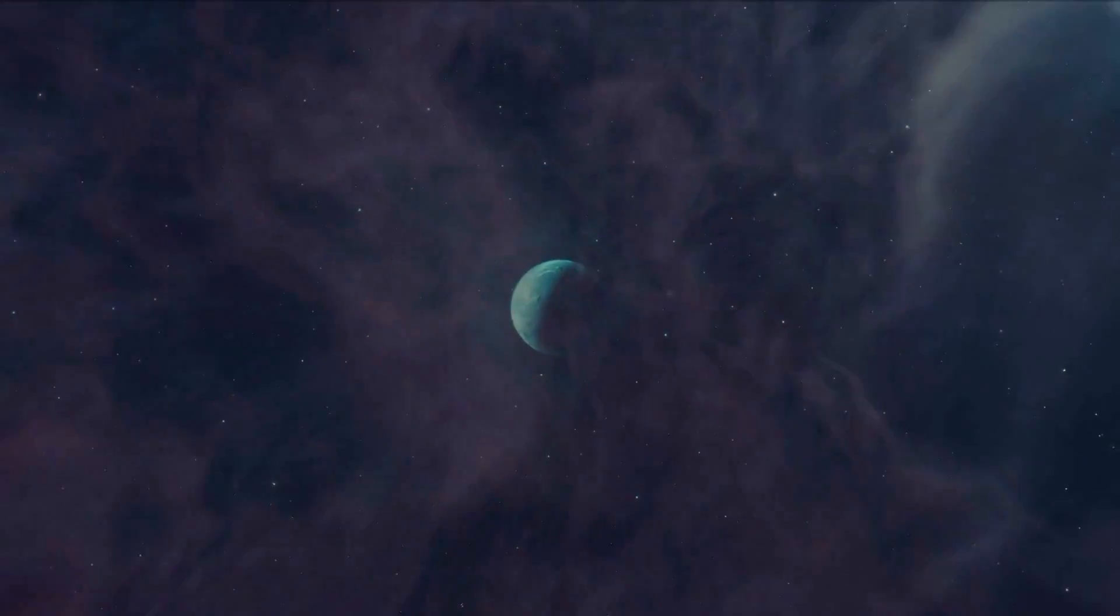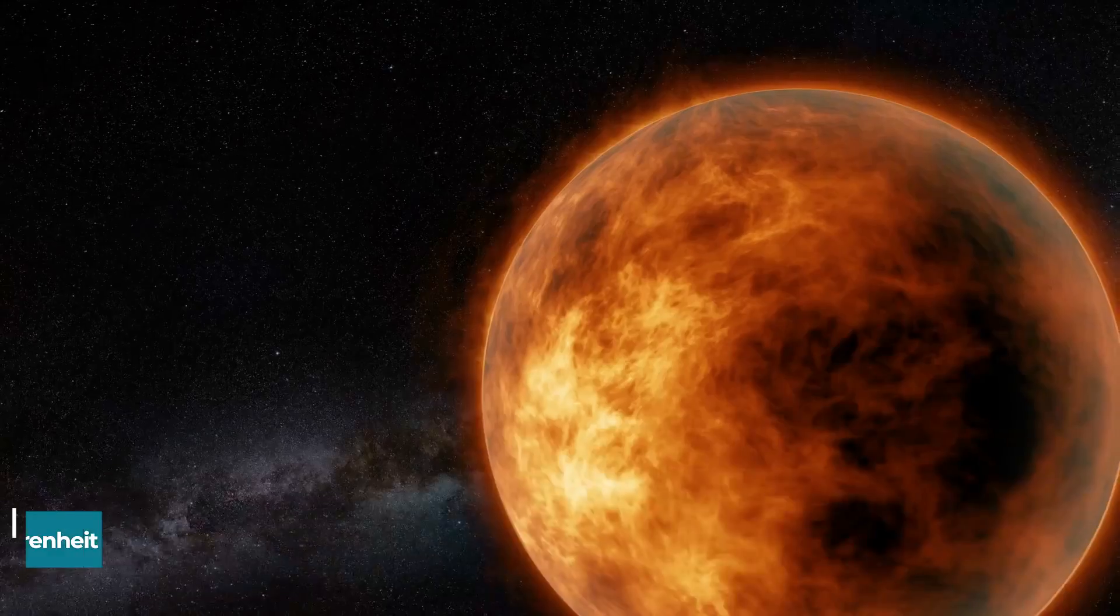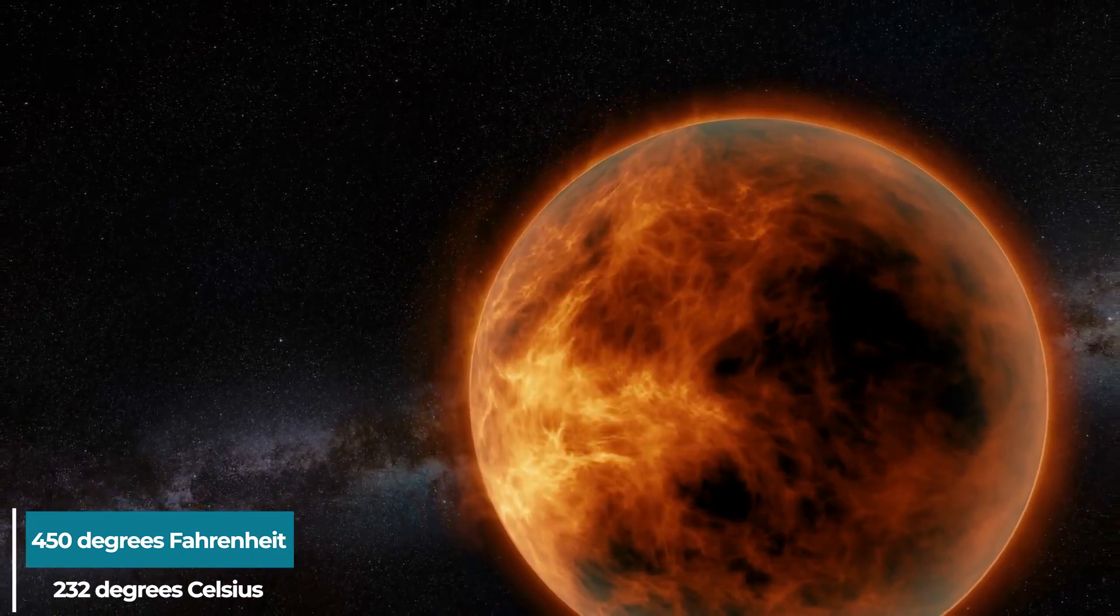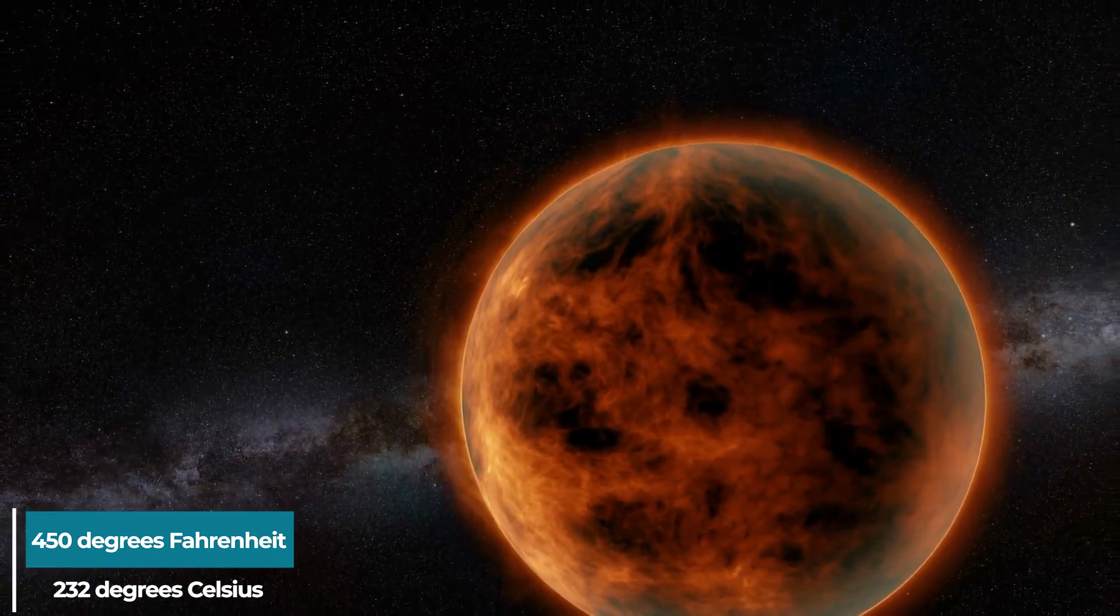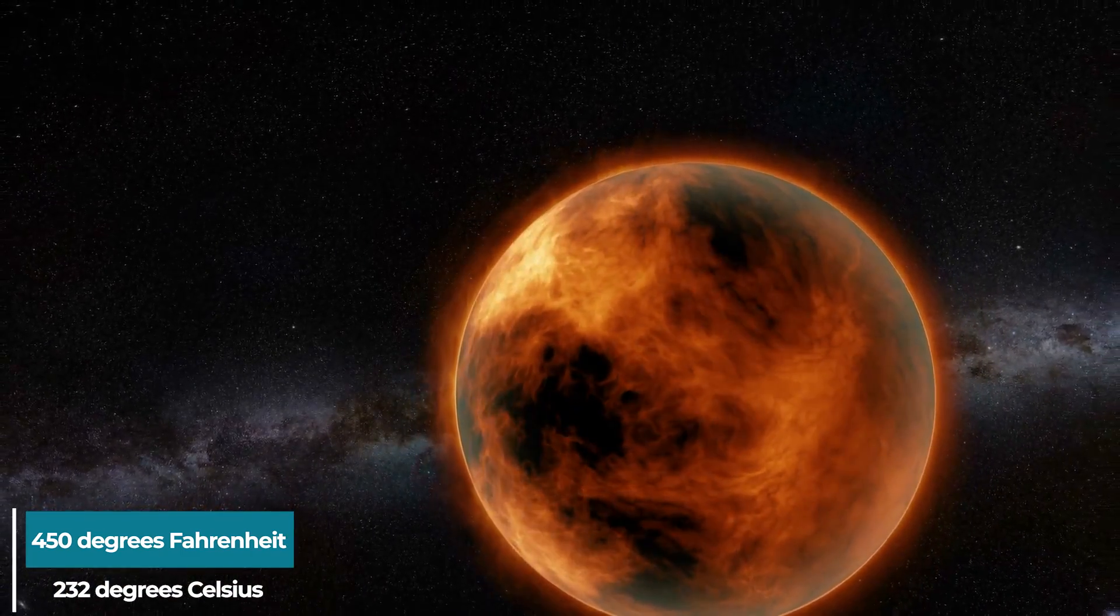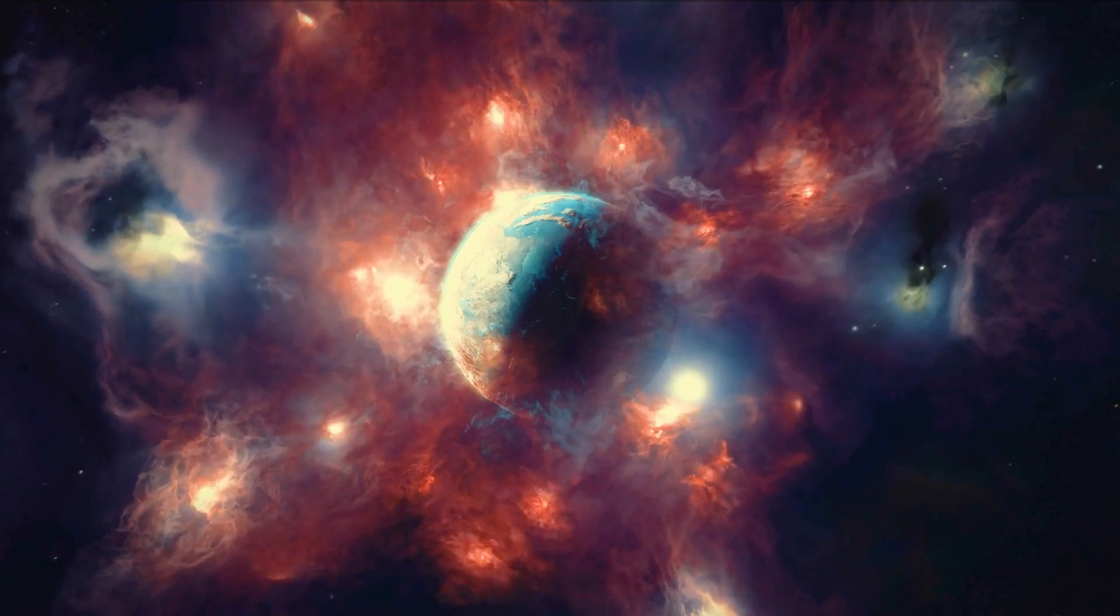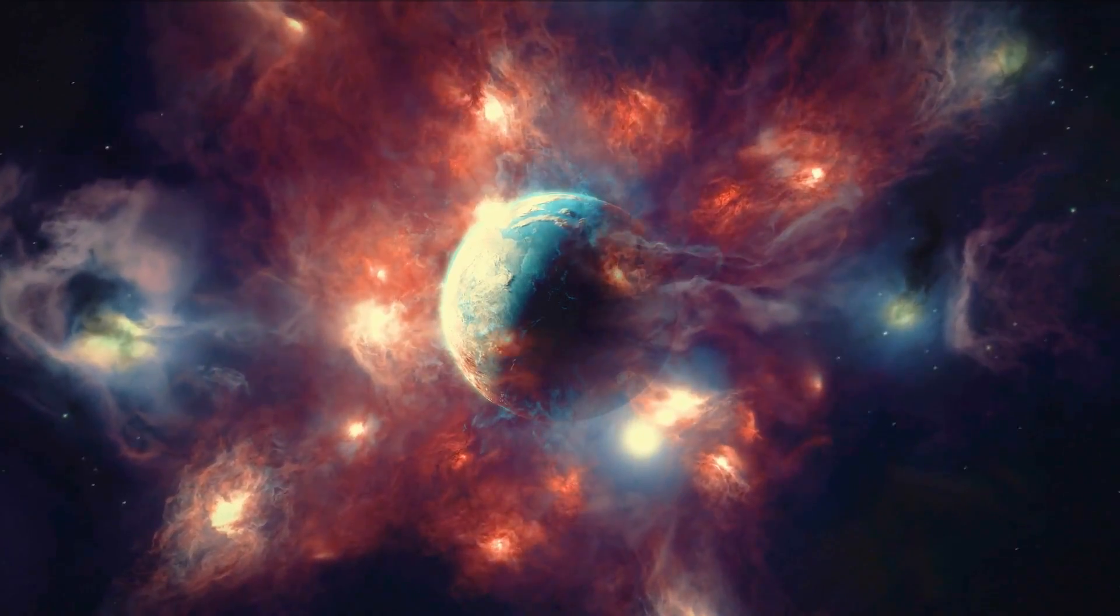They discovered that TRAPPIST-1b, the Earth-like planet, is most likely inhospitable due to its extreme heat, with a temperature of roughly 450 degrees Fahrenheit, 232 degrees Celsius, similar to that of an oven, and that it most likely has no atmosphere.